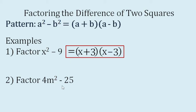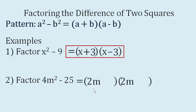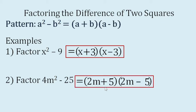Let's do example number two. Factor 4m squared minus 25. Again, there are two binomial factors. The square root of 4m squared is 2m, and the square root of 25 is five. Then we will just place plus and minus signs. So these are the factors: the quantity 2m plus five times the quantity 2m minus five.